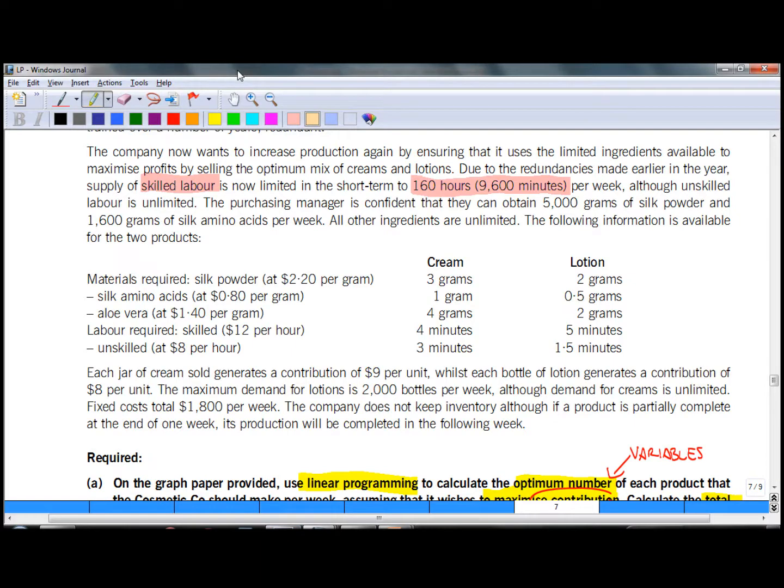There are three more constraints in the text. The first one is related to grams of silk powder, which is limited to 5000. Next one is 1600 grams of amino acids. And the last constraint is below the cost card and talks about maximum demand for lotions, which is 2000 bottles.